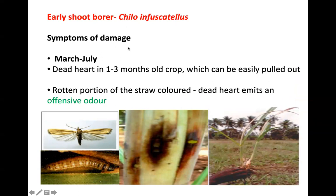Symptoms of damage: this pest usually comes during March to July. The adult forewing is yellow in color and the hindwing is white. Larvae bore into the shoot, creating a dirty-looking borehole. In one to three month old crop, it causes dead hearts — drying up of the central shoot. The central shoot can be easily pulled out at this immature stage. The rotten portion of the straw gets colored, and dead hearts emit an offensive odor.